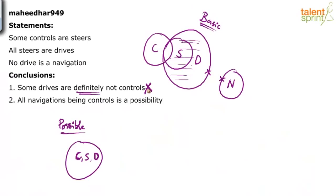Although it satisfies the basic diagram, it fails in the possible diagram, so the first conclusion is wrong. 'Some drives are definitely not controls' is wrong, because he has used the word 'definitely.' And even if you have not used the word 'definitely,' we would consider it a definite conclusion only, because it is like a statement — he is directly stating that some drives are not controls, not talking about possibility.